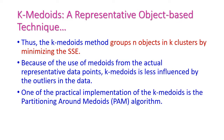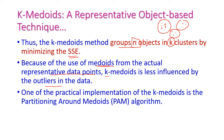The k-medoids algorithm groups n objects into k clusters by minimizing SSE. Because it uses actual medoids — the real representative data points — as cluster centers, it is less influenced by outliers in the data. If outliers are present, they do not affect the center point of the cluster. This makes k-medoids much more powerful when compared to k-means.